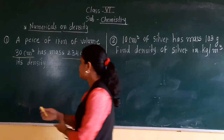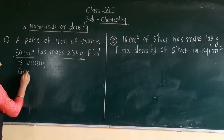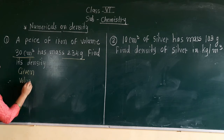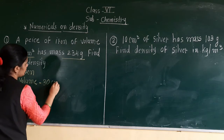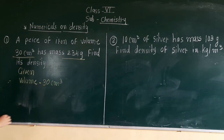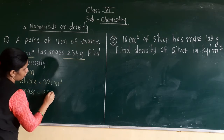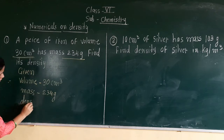First, we will write the given quantities. What is given? Volume is 30 cm cube. And mass is 234 gram. What we have to find out? Density.